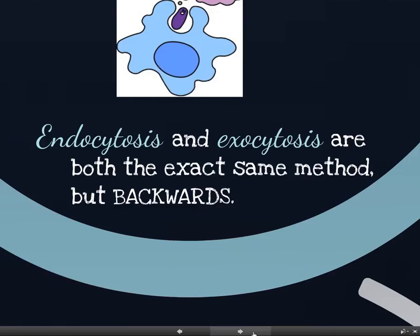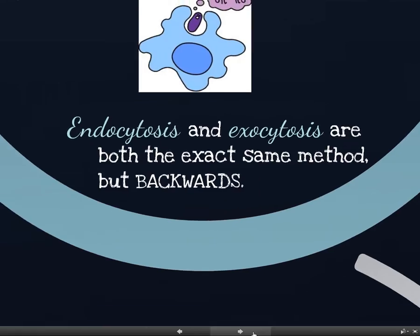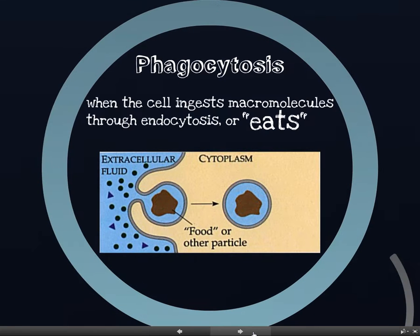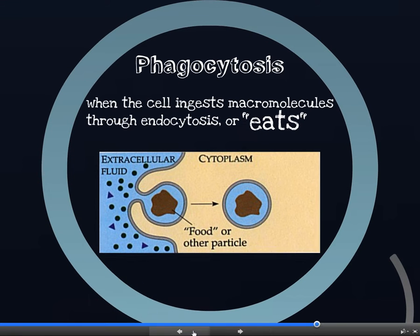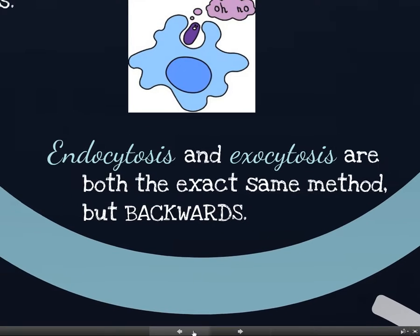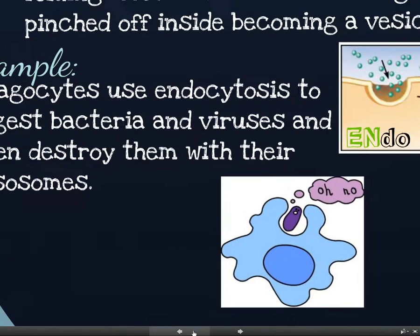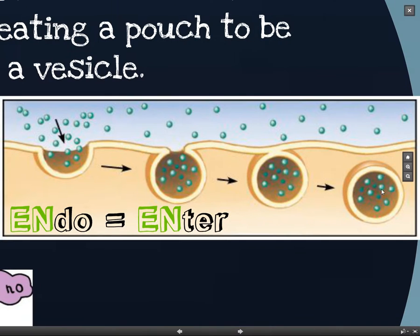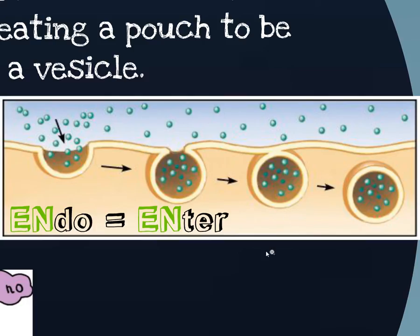Endocytosis and exocytosis are both the exact same things but just in reverse. Endocytosis was budding inward to take a vesicle containing something into the cell. Exocytosis is just the same process in reverse. You could imagine large molecules that need to be expelled from the cell — if you imagine this process in reverse, the vesicle fuses to the membrane and contents are expelled outward. So exocytosis is how a lot of proteins and things are expelled from cells.